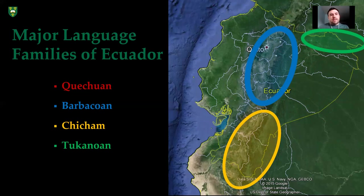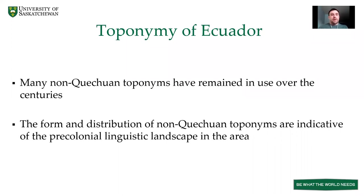The way we arrive at these conjectures is that many non-Quechuan toponyms have remained in use over the centuries. By looking at the form and distribution of the non-Quechuan toponyms, we are able to make some guesses about the pre-colonial linguistic landscape of what is now Ecuador. Toponymy is quite insightful, but the fact that we are basing many of these conjectures on toponymy alone is a little bit complicated.